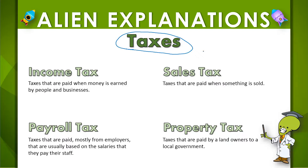So how does the government get that money? Well, it gets the taxes through a few ways. One way that it earns taxes is through income tax. Income taxes are taxes that are paid when money is earned by people and businesses. So anytime you make money,